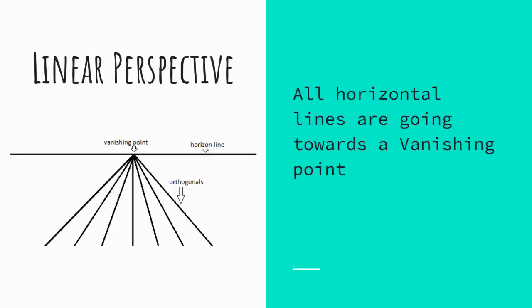One of the ways to create an interesting composition is to use depth. We've gone over these before, but let's just do a quick review. Linear perspective — we did linear perspective in our tree houses. In linear perspective, all the lines go towards a single point, referred to as the vanishing point. But there's more than just one way to show depth.